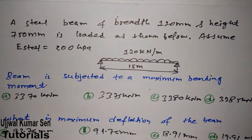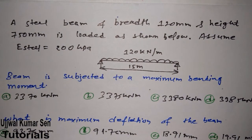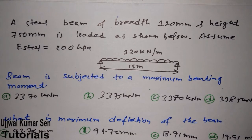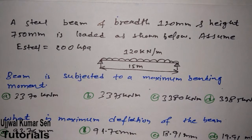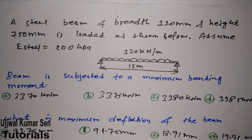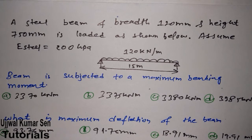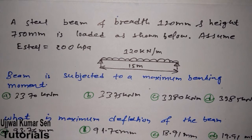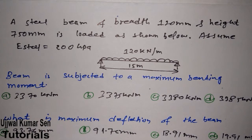This question involves a combination of shear force, bending moment, and deflection — a strength of materials problem. This same question was previously asked in the GATE exam, which is why I'm sharing it. Understanding how to solve this type of problem in the examination is important because it is a linked question worth four marks — two marks each. In GATE, linked questions are typically asked for four marks.